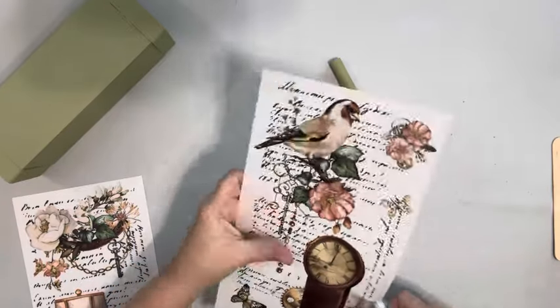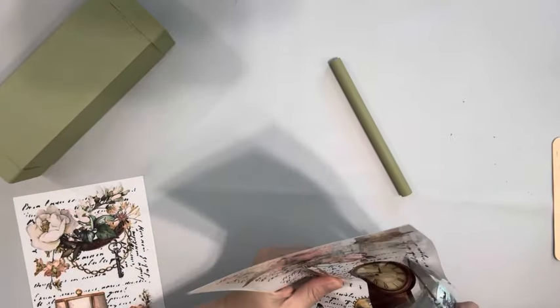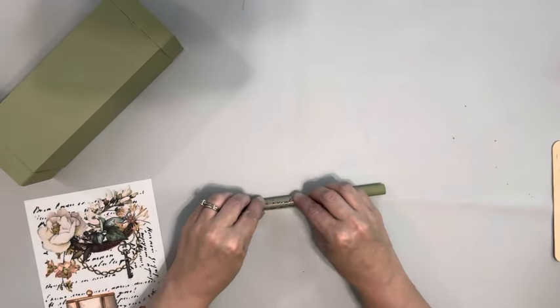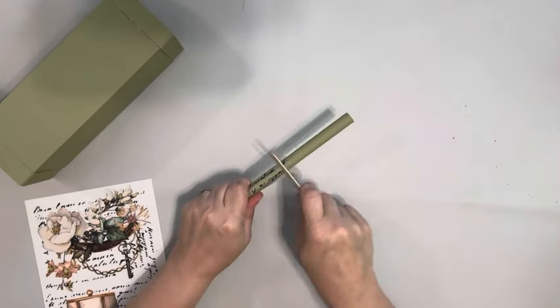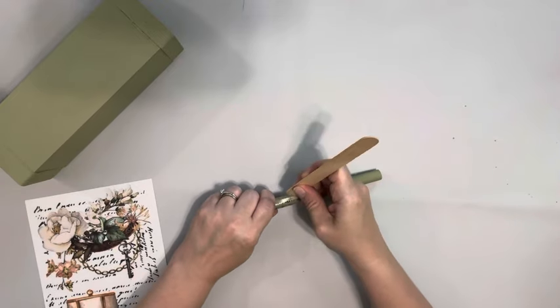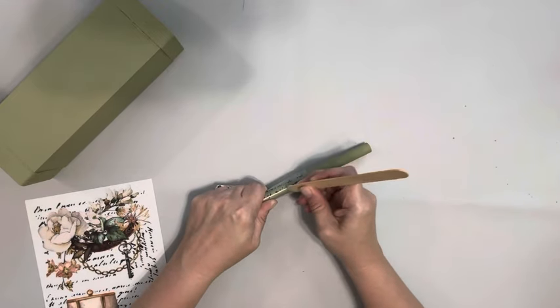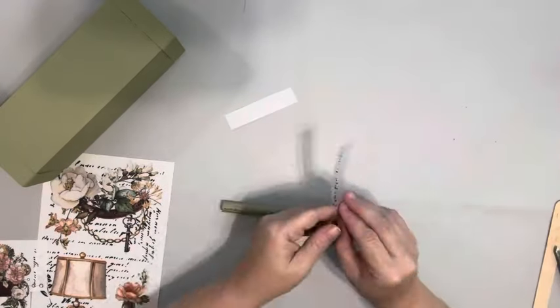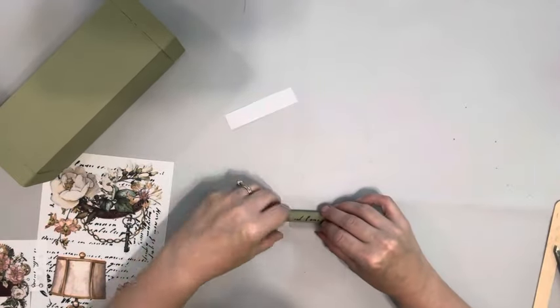Next I'm taking these rub-on transfers that I get from Amazon and I'm wanting something on the handle, so I decided to take the font that's on the transfers and just cut different sections and use a craft stick to transfer onto the handle. And I just do different sections covering it all the way around.